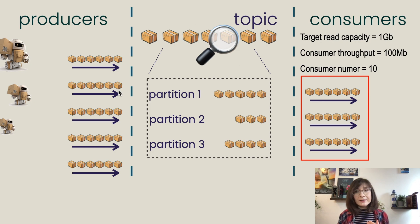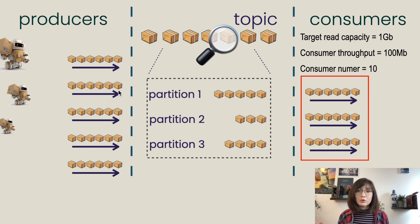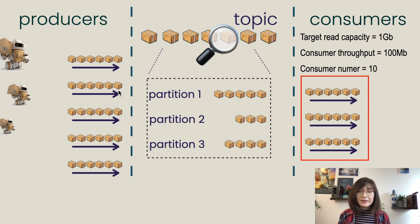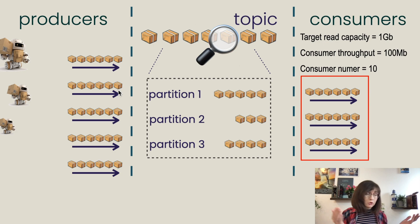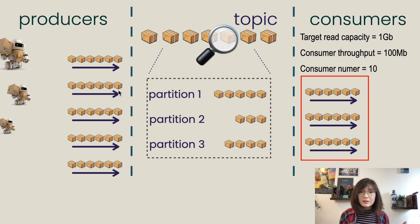The number of producers, by the way, is not directly connected to the number of partitions — you can add more producers if producing data is too slow, which is simple. And during system design for cases with heavy data load and complex data structures, maybe it makes sense to add two topics instead of one, just to make things a bit more simple.